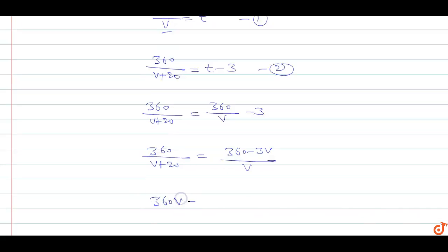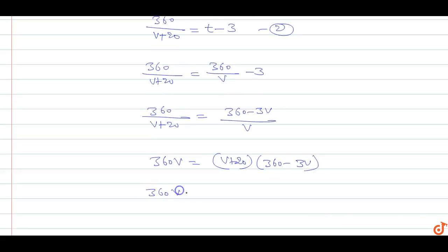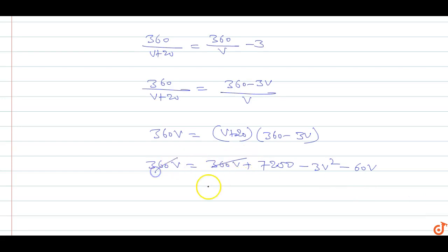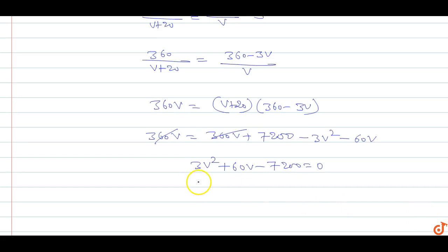Cross-multiplying: 360V is equal to (V plus 20) multiplied by (360 minus 3V). Expanding: 360V equals 360V plus 7200 minus 3V² minus 60V. The 360V terms cancel out, giving us 3V² plus 60V minus 7200 equals 0.